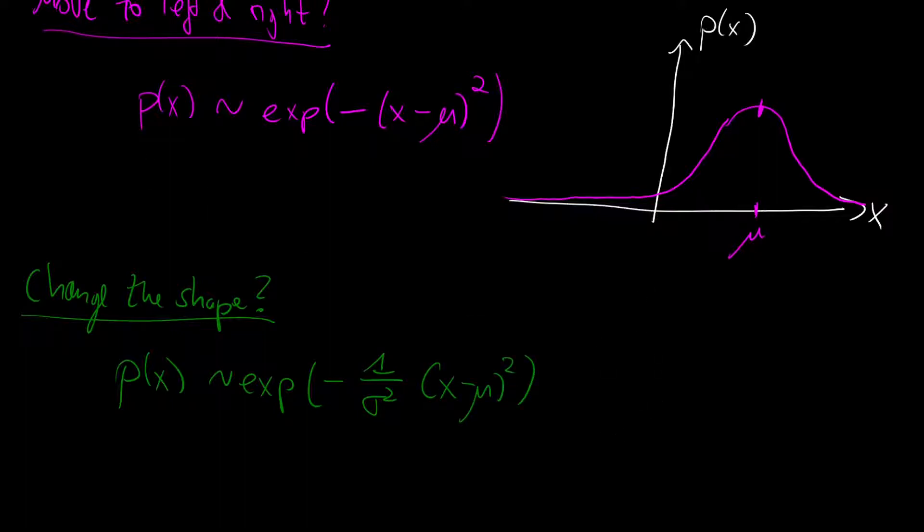And then p of x is proportional to the exponential of minus 1 over sigma squared x minus mu squared. And if we then were to plot this and we would get again shift the distribution to mu. But in our case now it is way narrower. And it's again centered around mu. But in this case we have some sort of a narrower field. And the sigma that we just introduced is called the standard deviation and it defines how wide our normal distribution is around its mean the mu.